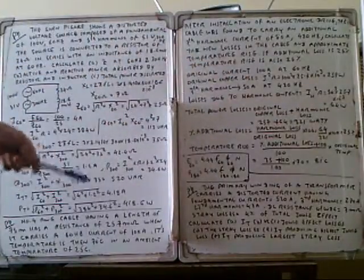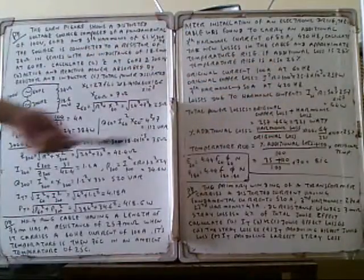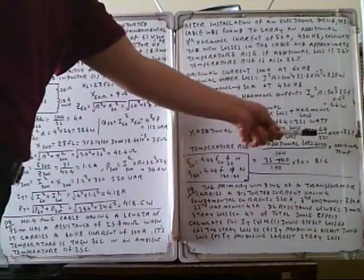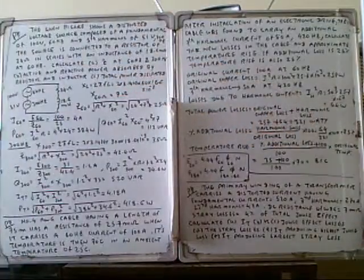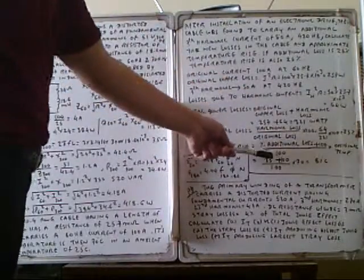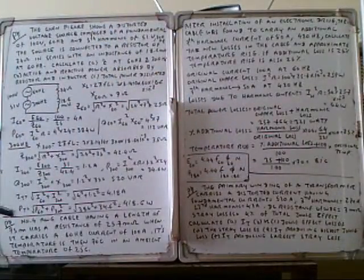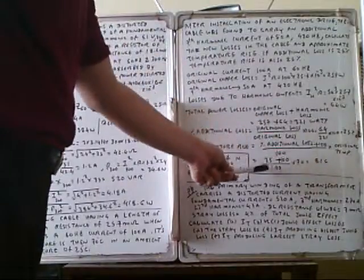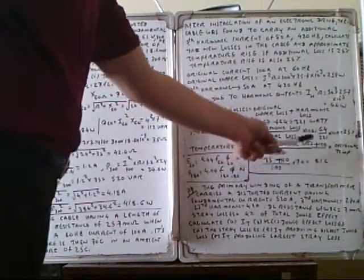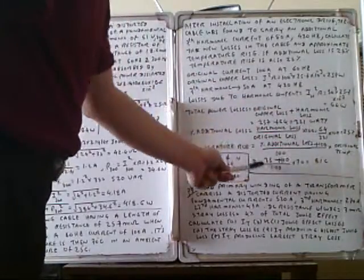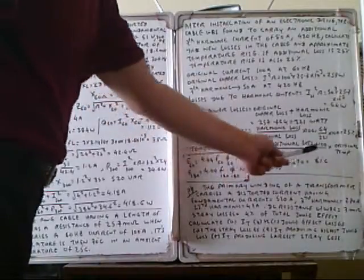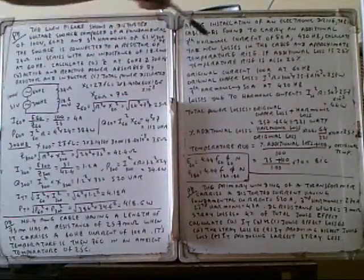Percentage additional loss: harmonic loss divided by original loss times 100. Harmonic loss is 64, original loss is 257. 64 divided by 257 times 100 equals 25%. Temperature rise formula is: percentage additional loss plus 100 divided by 100 times original temperature. Original temperature is 70 degrees centigrade. 25 plus 100 divided by 100 times 70 equals 87.5 degrees centigrade. This is how we calculate temperature rise due to additional losses.